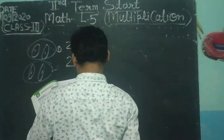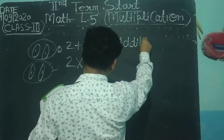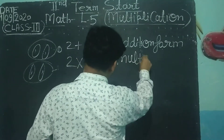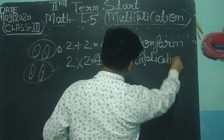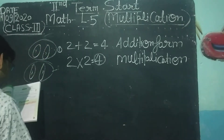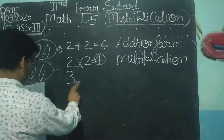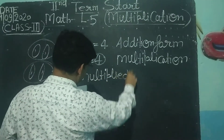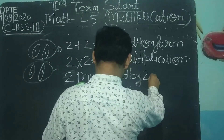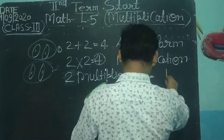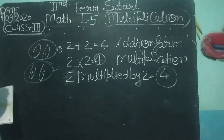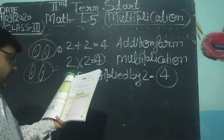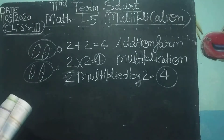इस method को हम addition form में लिख सकते हैं और यह multiplication form कहलाएगी। इसको कैसे पढ़ेंगे? 3 और 2, multiply — यानी 2 का 2 में multiply करोगे तो result आएगा 4। इस तरीके से table में जो figure बनी हुई है, counting number अलग-अलग है — ABCD दिये हैं — इस तरीके से आप question solve कर सकते हैं।